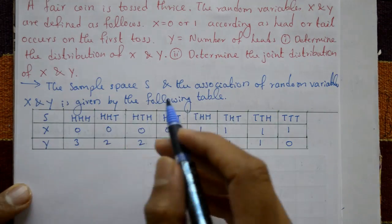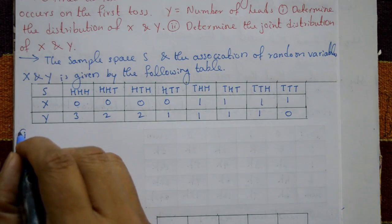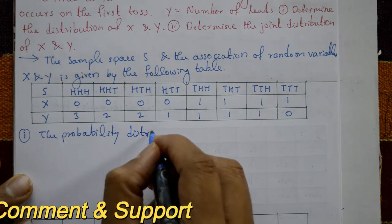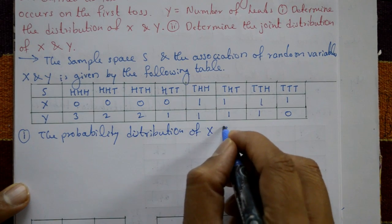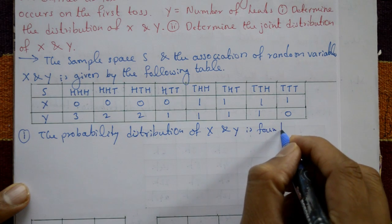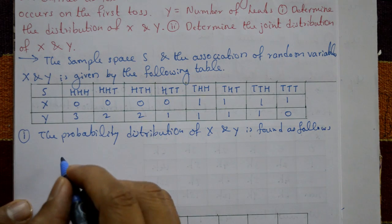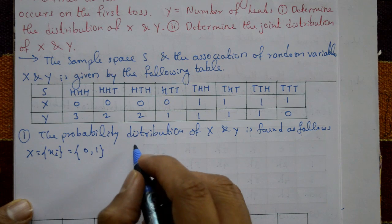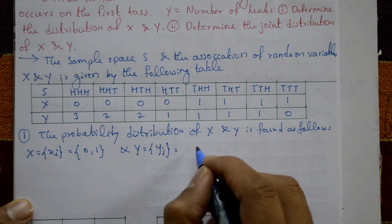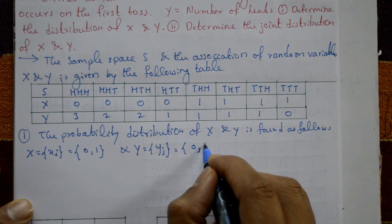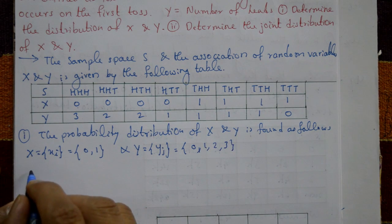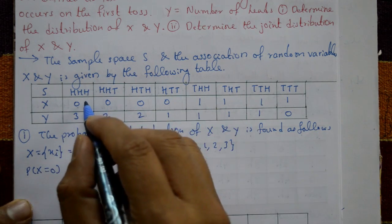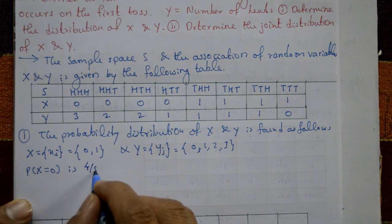First case: determine the distribution of X and Y. The probability distribution of X is found as follows. P(X=0): X equals 0 in 4 outcomes out of 8, so P(X=0) = 4/8 = 1/2. P(X=1): X equals 1 in 4 outcomes out of 8, so P(X=1) = 4/8 = 1/2.